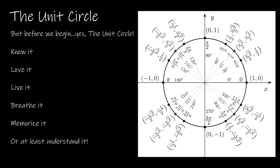Before we get into the review of inverse trigonometric functions — and again, it should be review because you should have learned all about inverse trig functions and the unit circle when you're in trigonometry or precalculus. But let's very quickly review what the unit circle is all about and why I would include it in this video. The whole point of the unit circle is that it's a circle with a radius of 1, and every point on the unit circle is found by taking cosine of theta, comma, sine of theta.